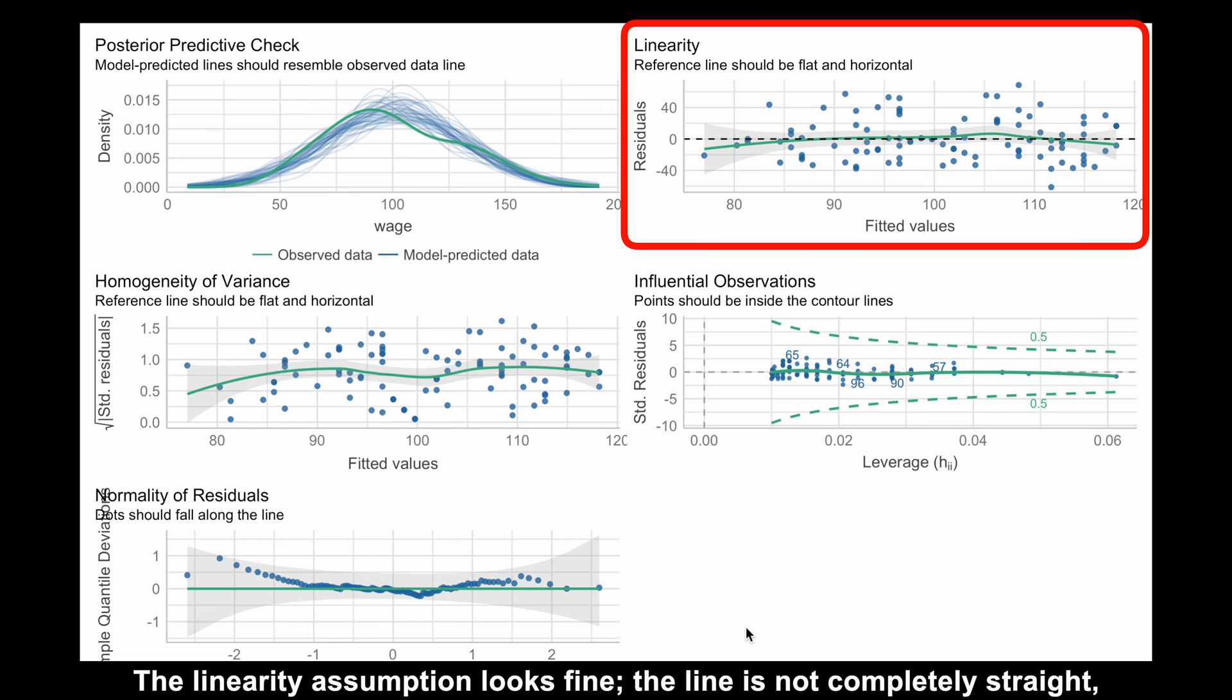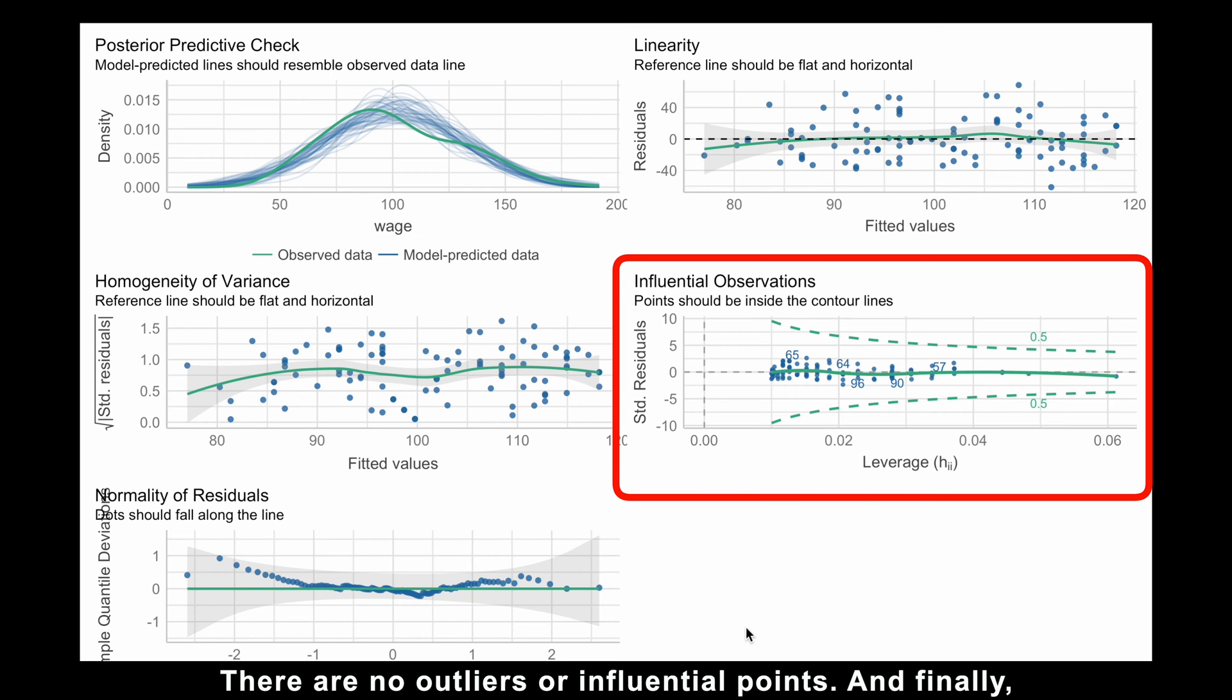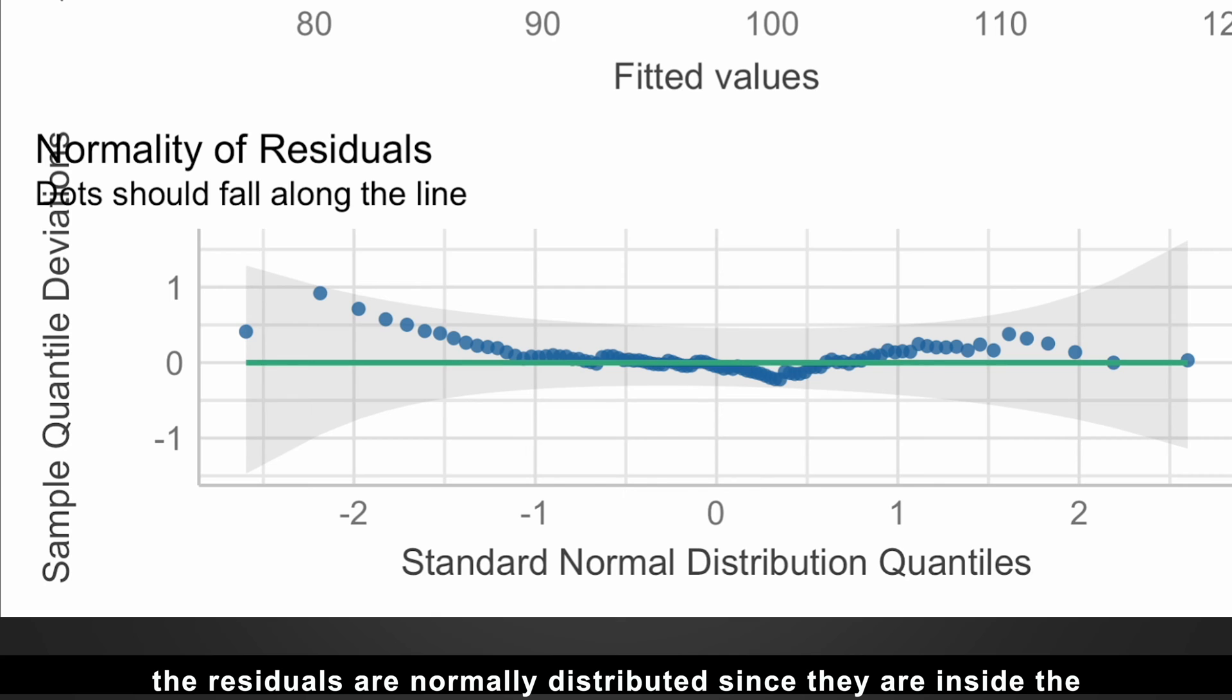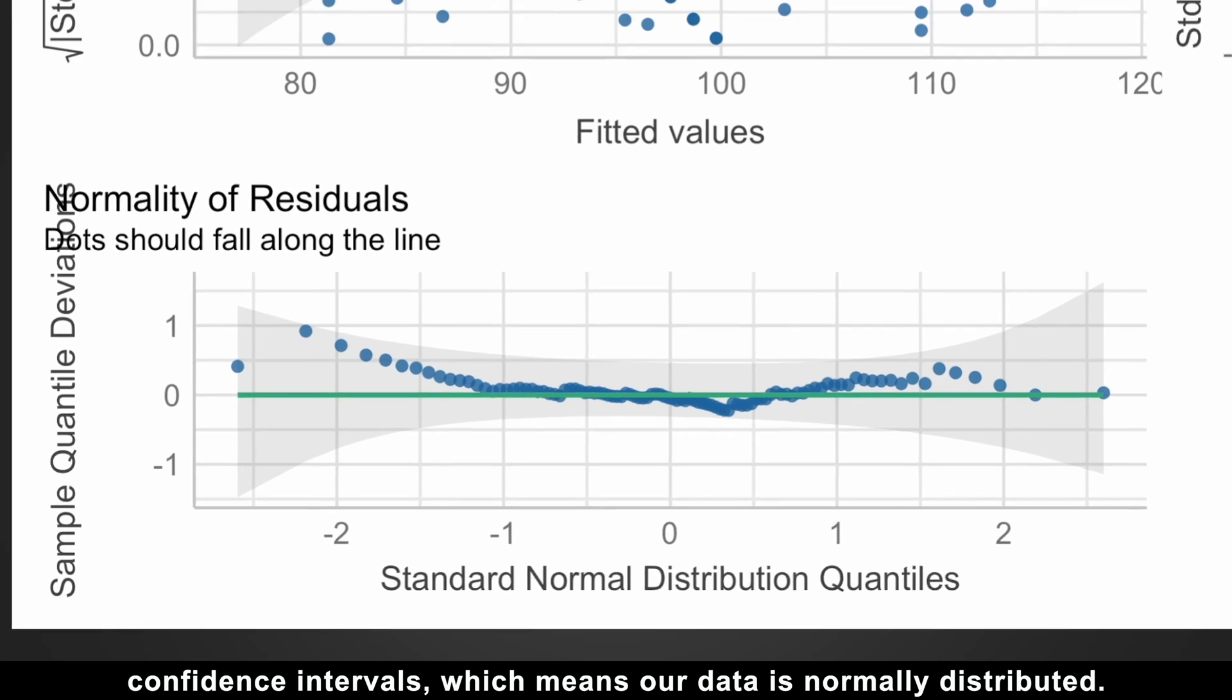The linearity assumption looks fine. The line is not completely straight, but there is no dramatic non-linearity to see. The variance is homogeneous. There are no outliers or influential points. And finally, the residuals are normally distributed since they are inside the confidence intervals, which means our data is normally distributed.